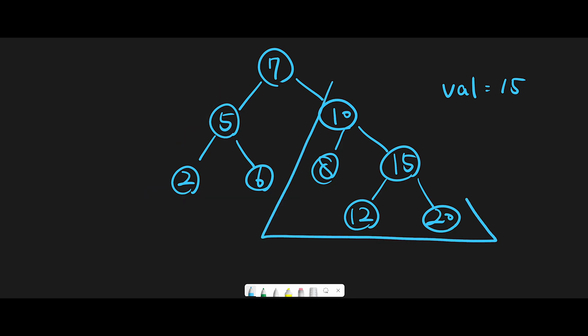And look at this subtree. In this case, 10 is a root node, and the left side is 8, and the right side is 15. So looks good. And from 15, so this subtree, the left side is 12, and the right side is 20. So looks good.